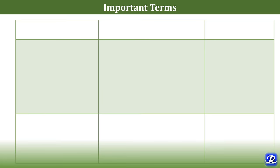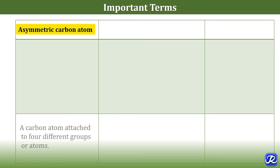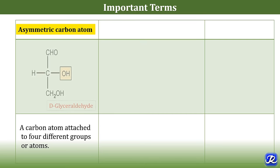To understand the structural aspects of monosaccharides, we need to understand some important terms like asymmetric carbon atom. It is a carbon atom that is attached to four different groups or atoms. For example, this is a structure of glyceraldehyde where this carbon atom is attached to four different groups or atoms, and this carbon atom is called an asymmetric carbon atom.